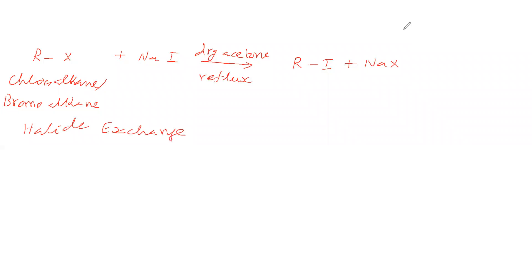In this halide exchange, we can prepare Iodo-Alkanes from Chloro-Alkanes or Bromo-Alkanes. Now, sodium iodide is more soluble in dry acetone, whereas NaX — meaning NaCl or NaBr — is less soluble in dry acetone.